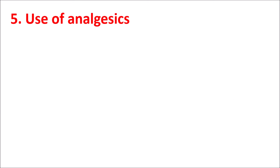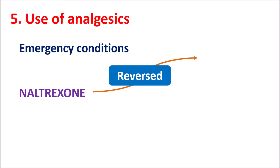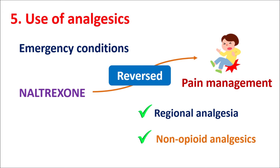The fifth point is the use of analgesics. In a few emergency conditions, it is required that Naltrexone treatment should be reversed in order to produce analgesic activity of opioids. Opioids will not act in the presence of Naltrexone, so under emergency conditions where pain management is essential, Naltrexone activity should be reversed. In such conditions, regional analgesia is preferred by administration of local anesthetics, and use of non-opioid analgesics is preferred. In those people who are unable to control pain with these two methods, opiates should be administered under very close monitoring by a professional.